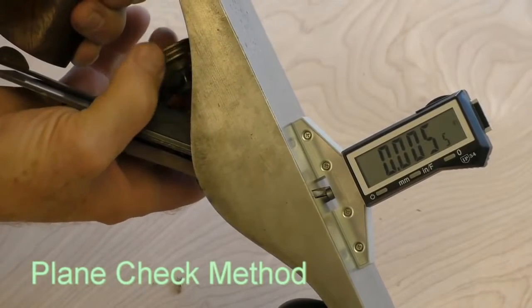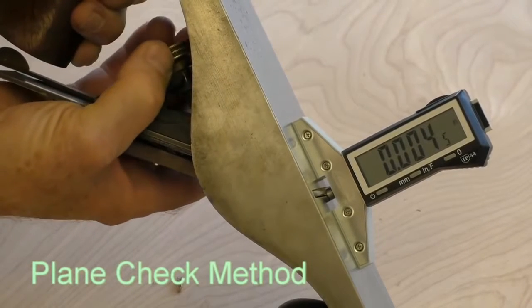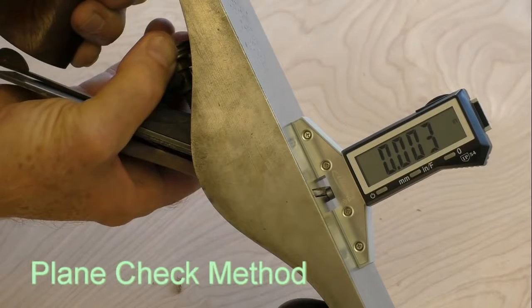With PlaneCheck, precise plane iron settings are a snap. To set the depth, place PlaneCheck across the middle of the blade. Raise the blade to the setting you want. You can literally watch your adjustments as they are made.